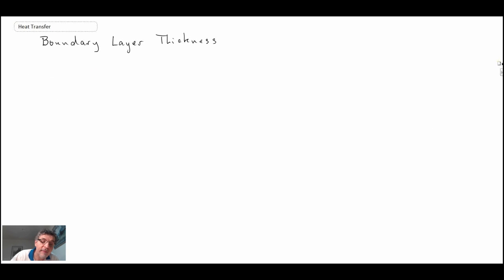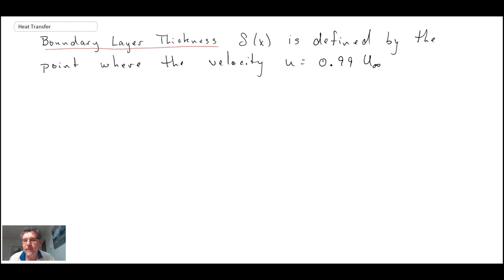Even laminar can be hard, depending upon the external pressure gradient that might be with our flow. So looking at the boundary layer thickness, delta x. So there are different definitions for the boundary layer thickness, but we'll use this one. 99% of the free stream velocity.